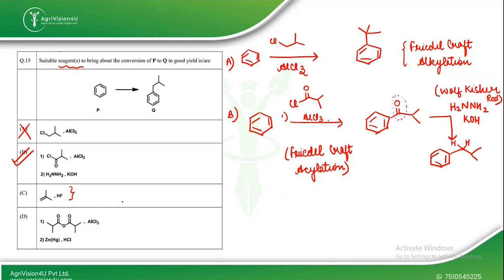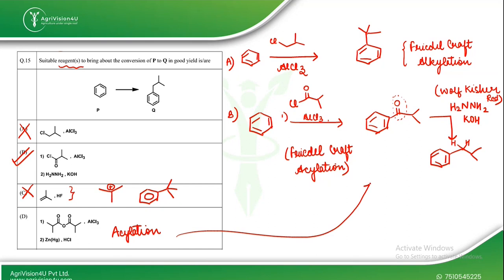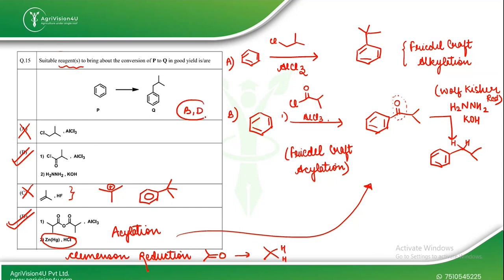In case C, with HF, the 3° carbocation generated gives the wrong product via Friedel-Crafts alkylation. In case D, acylation again forms the carbonyl product, followed by Zn-Hg/HCl — the Clemmensen reduction — which also converts the carbonyl to CH₂. This again gives the correct target product. So the correct options are B and D.